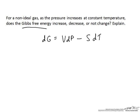If we have an isothermal system, then dT is equal to zero. Therefore, dG will just be equal to V dP at constant temperature.